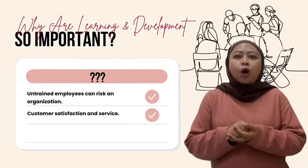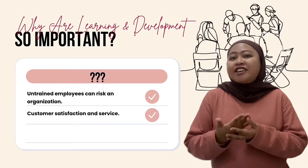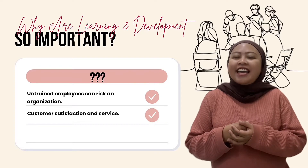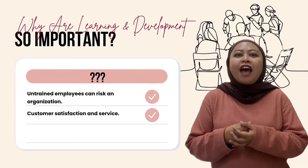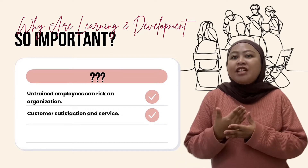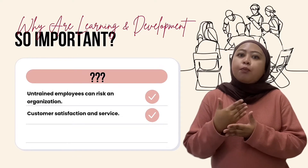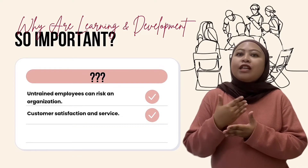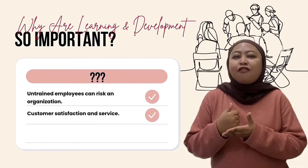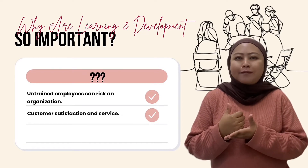Fourth, untrained employees can risk an organization. Companies must create a safe and welcoming workplace. Learning and development reduce employee turnover, attract new personnel, and enhance a company's bottom line by making it more innovative and productive. Learning and development also oversee risk mitigation through compliance and safety training. Employers may educate employees on proper workplace ethics to promote a safe and inclusive workplace. Practical ethics training may increase employee performance and lessen the risk of a lawsuit for breaking industry safety and behaviour requirements.